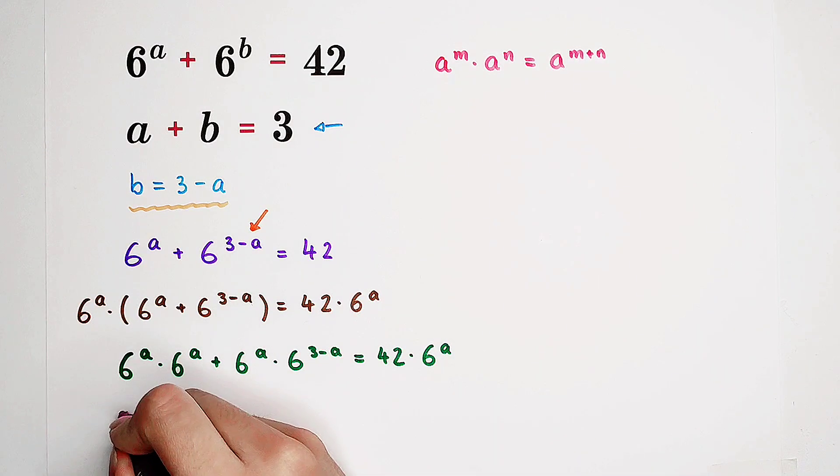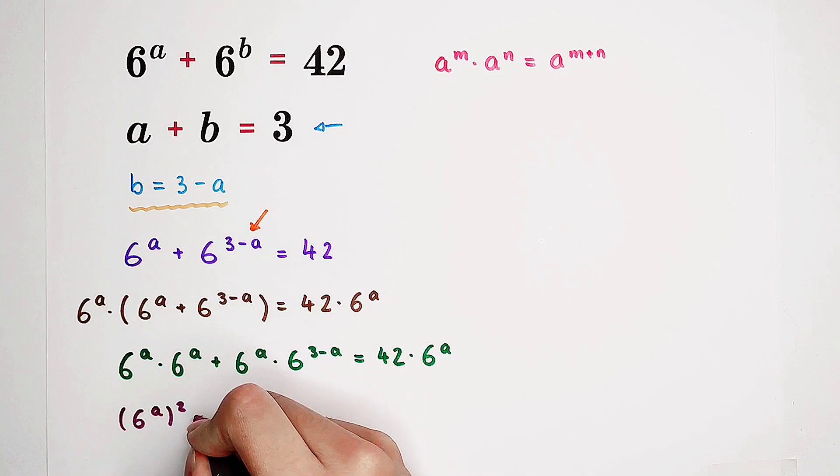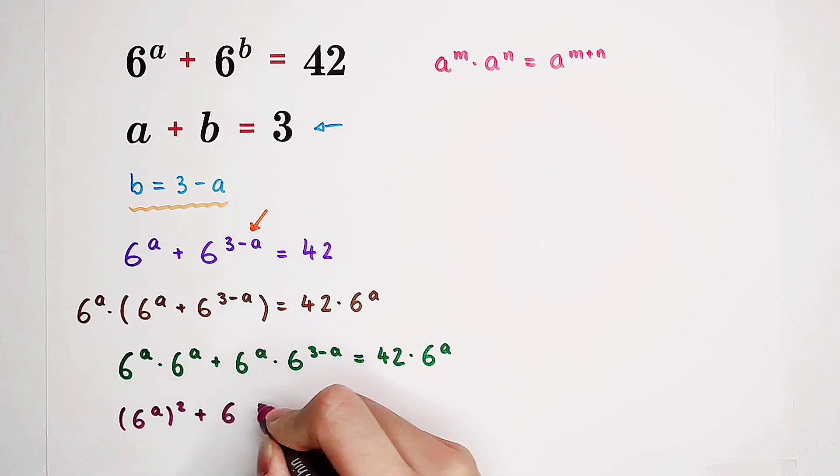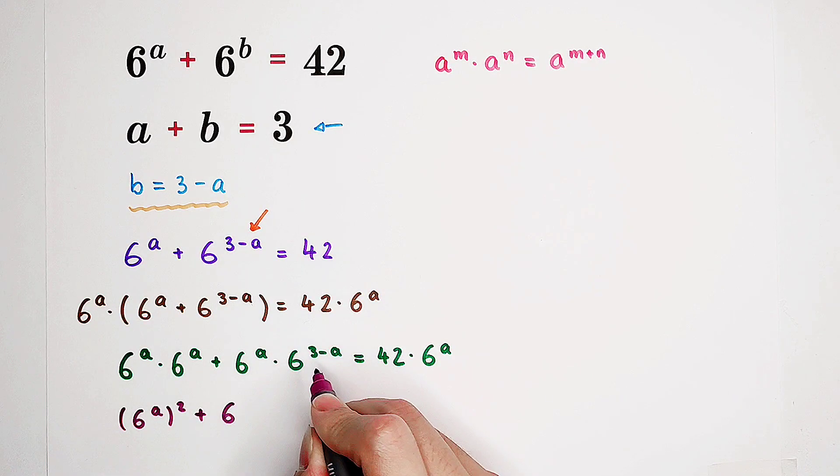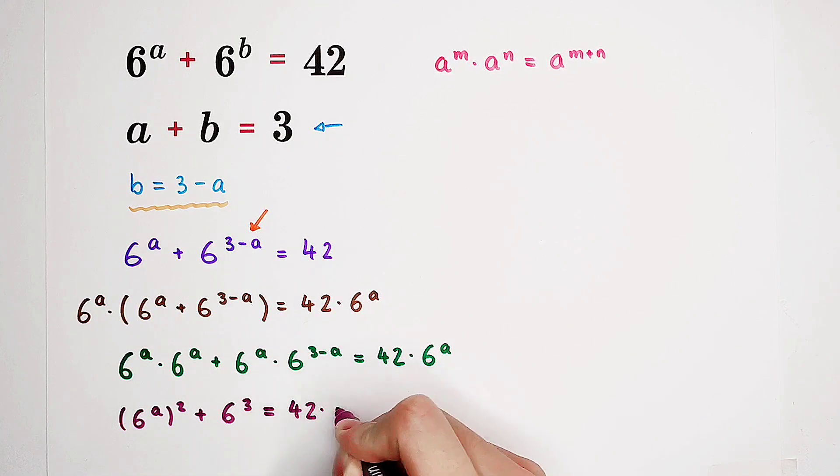This one is, of course, 6 to the power of A then squared plus that is 6 to the power of A plus 3 minus A. A minus A cancel. So, this is 6 to the power of 3 equals 42 times 6 to the power of A.